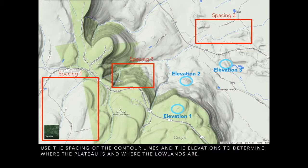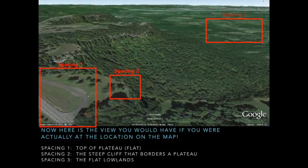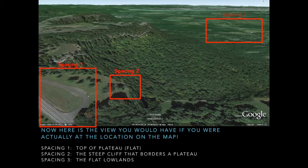So let's transition to the Google Earth picture of this same area. Now if you were actually at this location, this is what you'd see. You can see that spacing one is the top of the plateau — you can see the road there, which is actually an overlook. Spacing two marks the edge of the plateau where it starts to drop off steeply. And then spacing three is the flat lowlands, the Hudson Mohawk Lowlands.